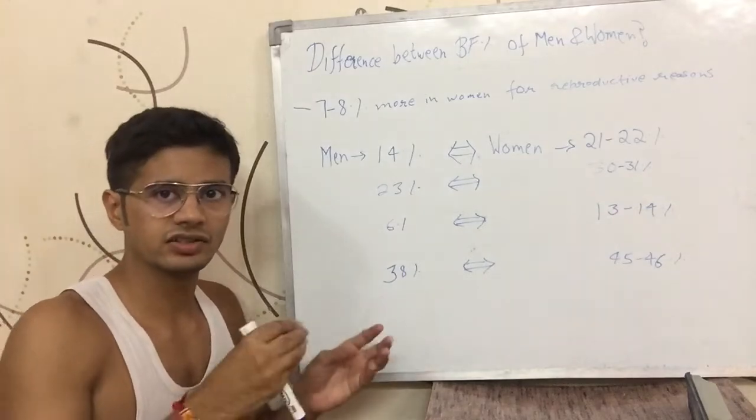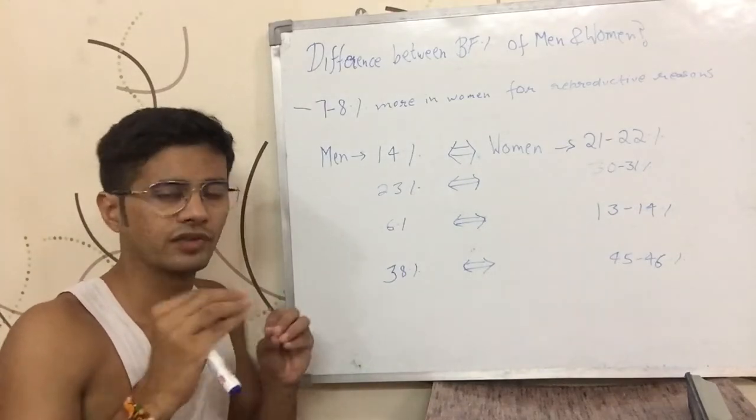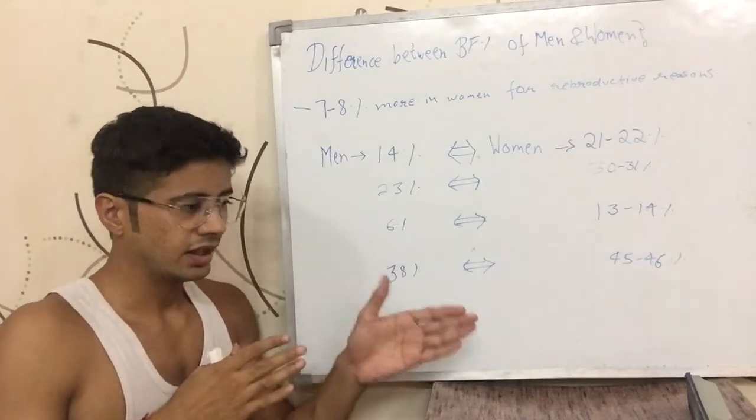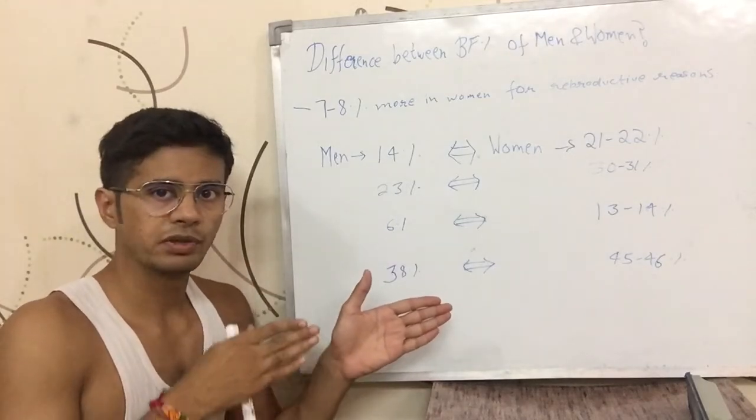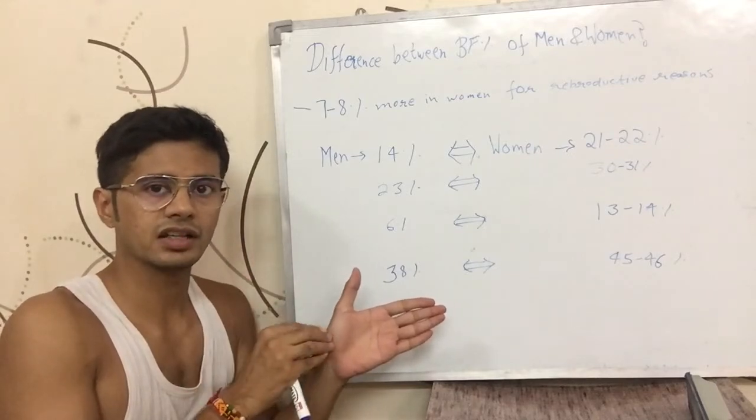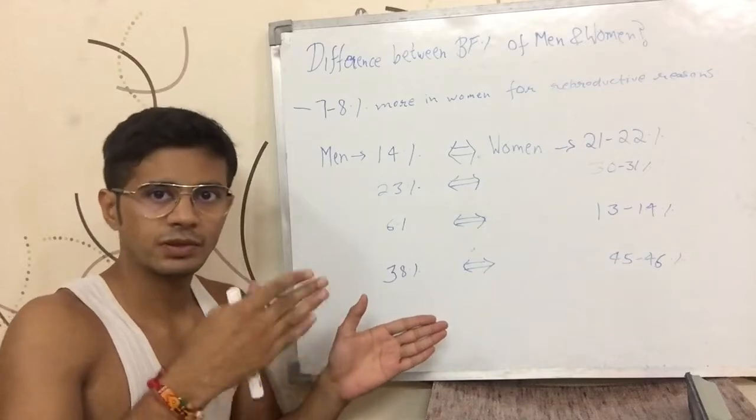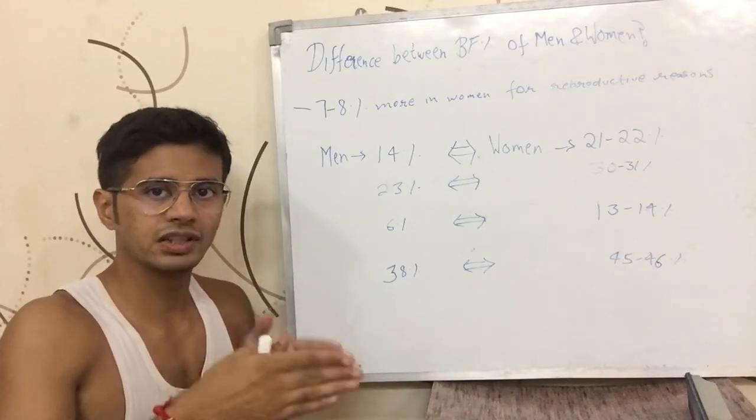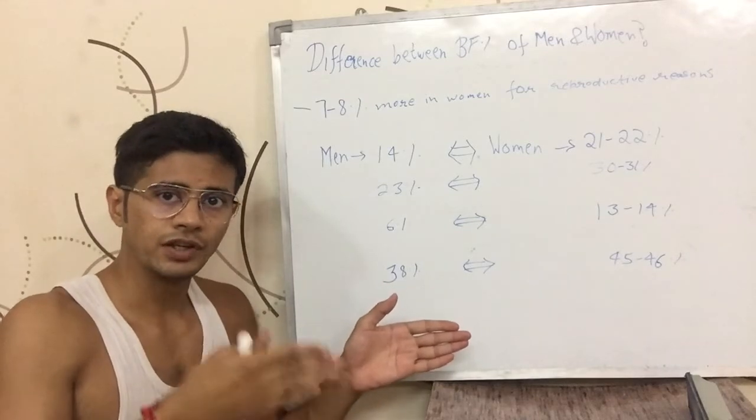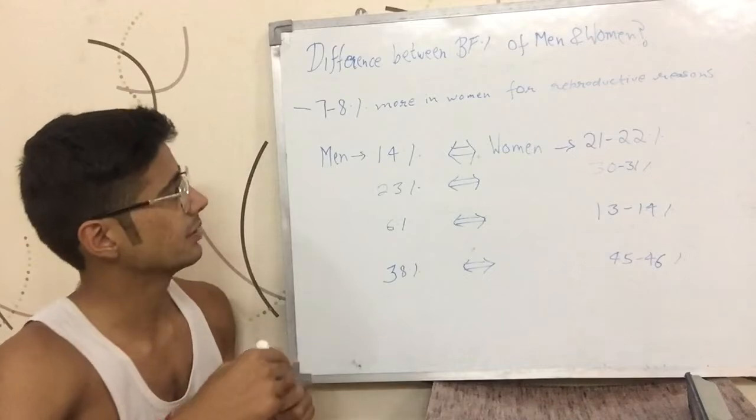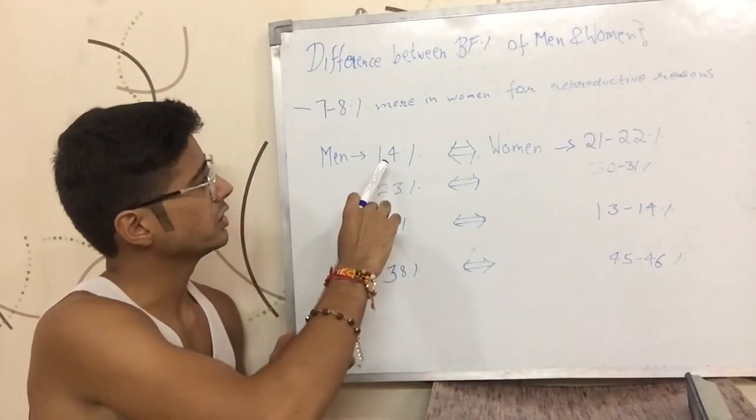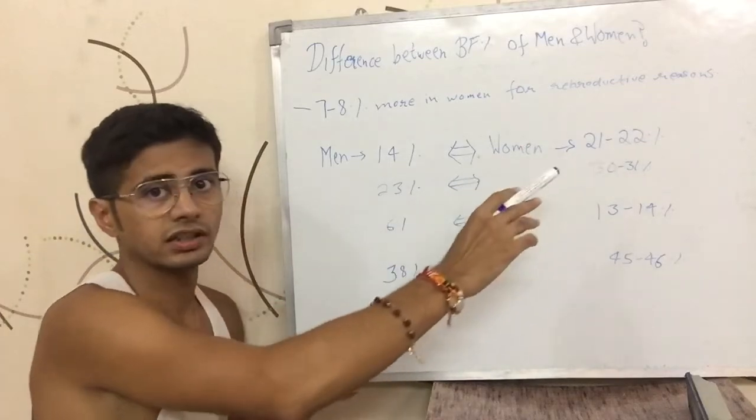Body fat percentage, I'm telling you in this video. Body fat percentage, if you haven't seen it, go to the previous video. One person's body fat percentage is the most healthy and fit. If you add 7-8% to the body fat percentage, it'll become 20-22% for the body fat percentage. It means that a man is 14% body fat. So if you add 7-8% to the body fat percentage, you'll get 21-22% for women.